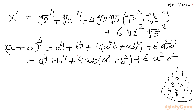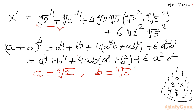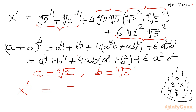Now I will compare and replace: let a = ⁴√2 and b = ⁴√5. Then we can see the expansion matches: a⁴ + b⁴, then 4ab in bracket (a² + b²), and the last term 6a²b², where a = ⁴√2 and b = ⁴√5. So the conclusion is: x⁴ = (⁴√2 + ⁴√5)⁴.